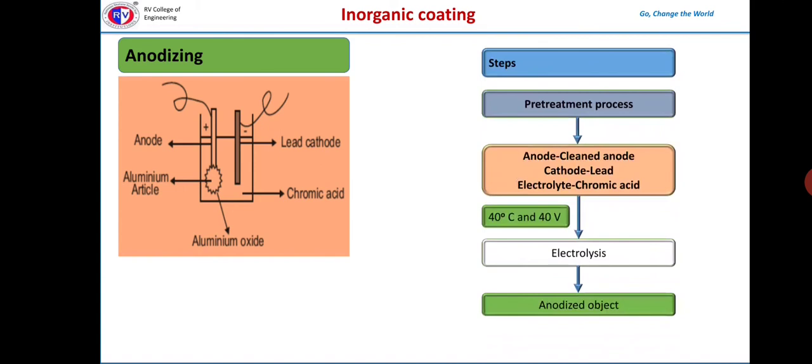A plate of lead or stainless steel is made as cathode. When current of moderate density is passed, oxygen liberated at the anode combines with anode material to form an oxide which takes the form of a thick film. Al2O3 deposits on the surface of the object.